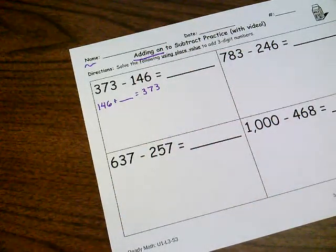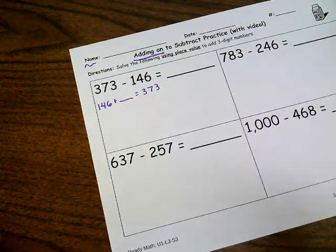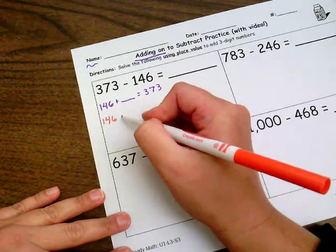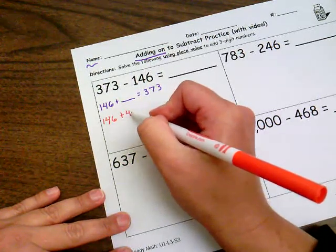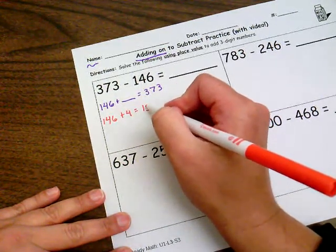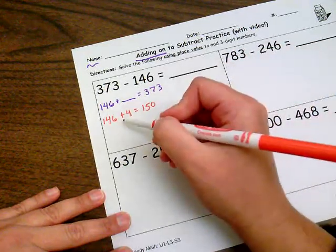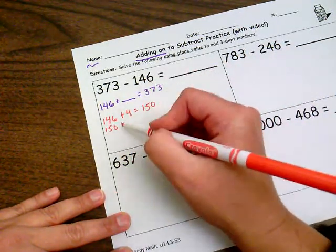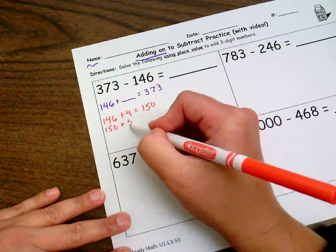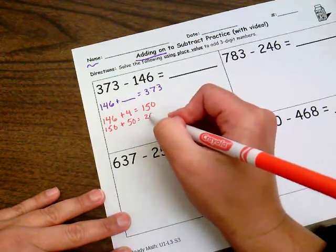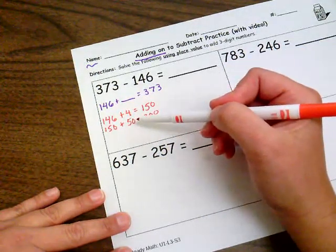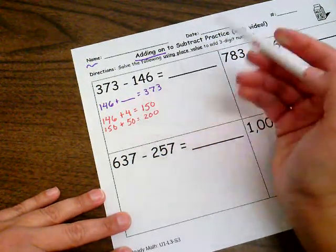I'm going to start with my smaller number because I'm going to be counting on 146 plus what is going to get me to 373. And I don't know that number yet, but I'm going to slowly add on until I get there. So I always want to add on some ones first to get to a nice round number. I can add four more to get to 150.